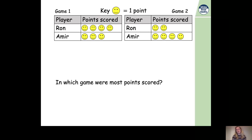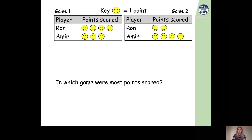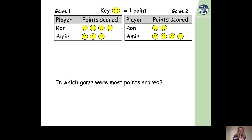In the first game Ron has four smiley faces and Amir has three, so four plus three equals seven. Seven smiley faces, and if one smiley face equals one point, seven smiley faces equals seven points — so there are seven points in the first game. In the second game Ron has two smiley faces, so he scored two points.